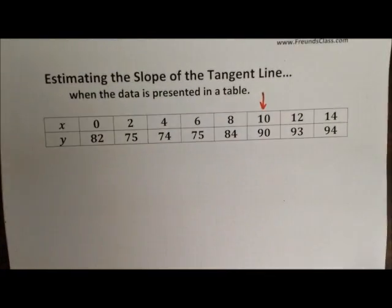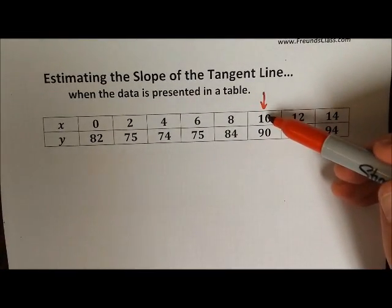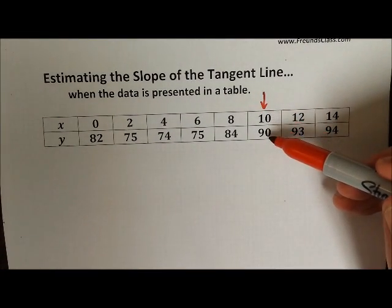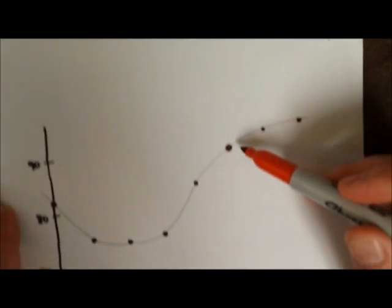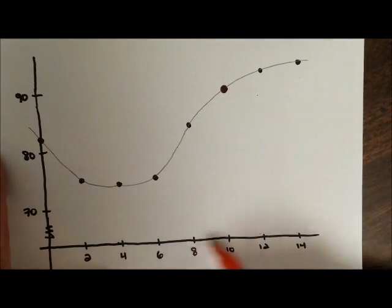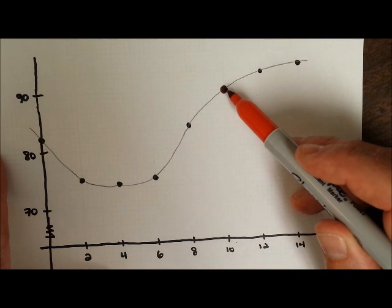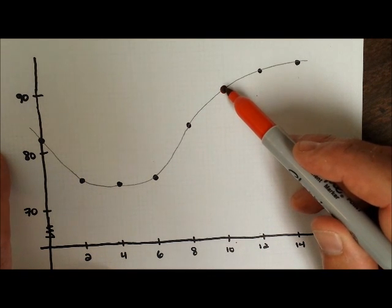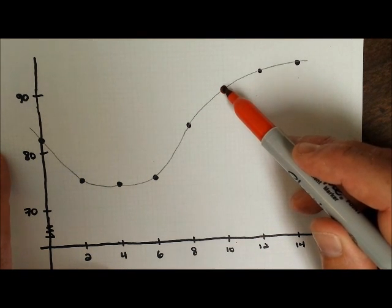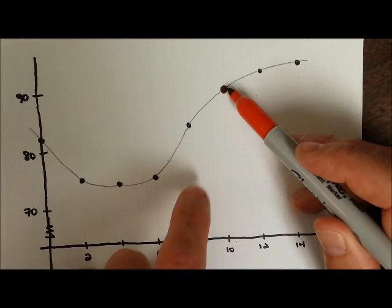So what we're going to do here — I've chosen this point with the coordinates 10, 90. If you look at the table, you can see 10, 90. We're going to estimate the slope of the tangent line at the coordinates 10, 90.